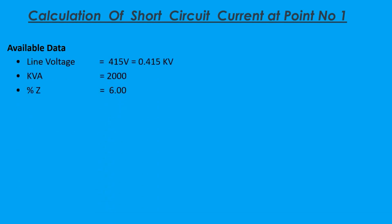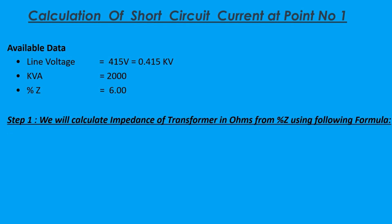For calculation of short circuit current at point number one, the available data is: line voltage equals 415 volts, that's 0.415 kilovolts, kVA is 2000, and the percentage impedance is 6%. Step one: we'll calculate the impedance of the transformer in ohms from percent impedance using the formula — impedance of transformer equals percentage Z times 10 times kV squared, all divided by kVA.